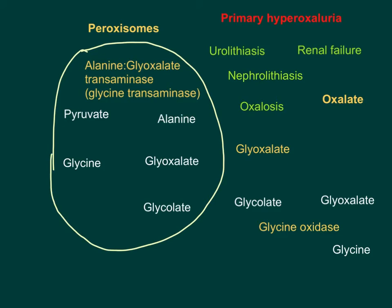In today's video I am primarily explaining primary hyperoxaluria. Primary hyperoxaluria differs from just hyperoxaluria in that hyperoxaluria is generally secondary to consumption of excess oxalate-containing food sources, whereas primary hyperoxaluria is because of an inherited condition — autosomal recessive inheritance of a defect in a gene coding for enzymes involved in the metabolism of glycine.